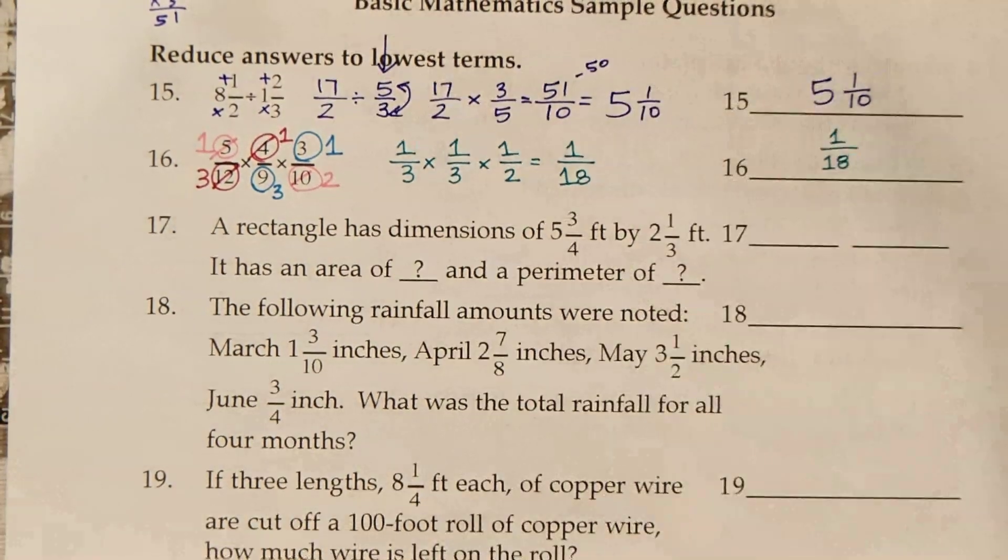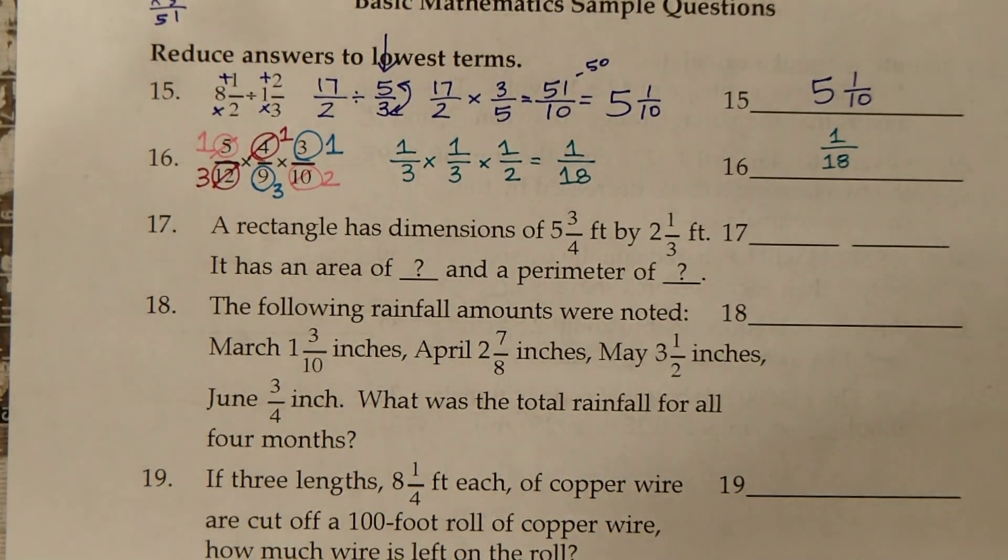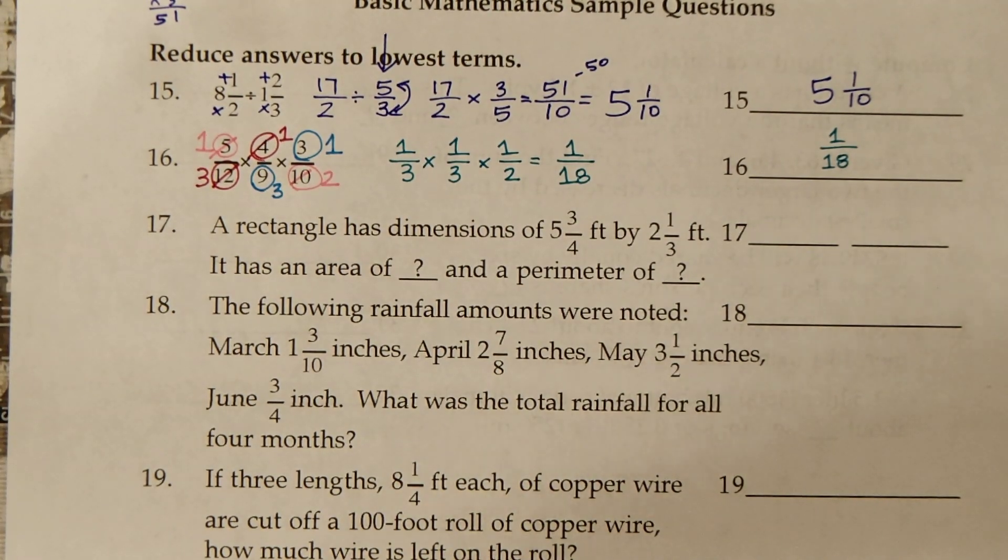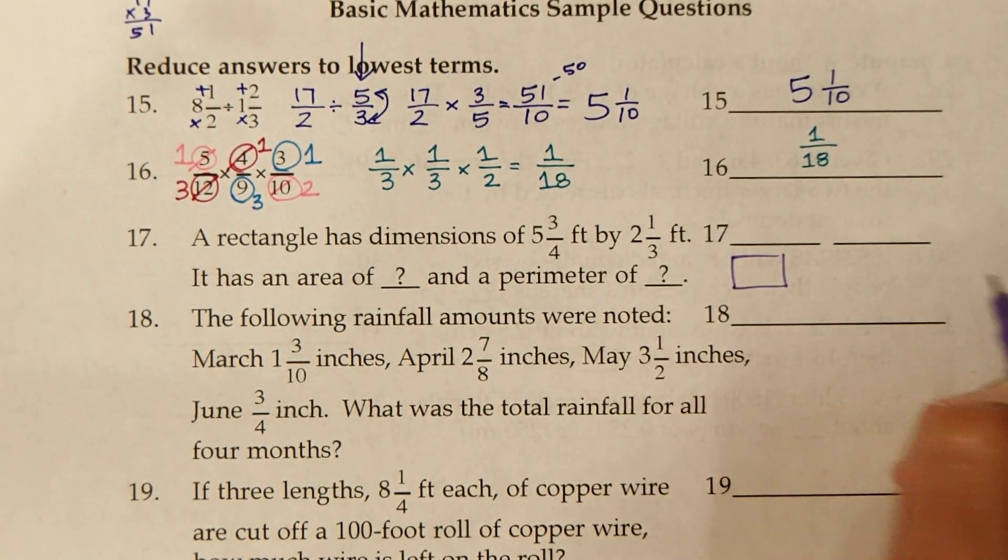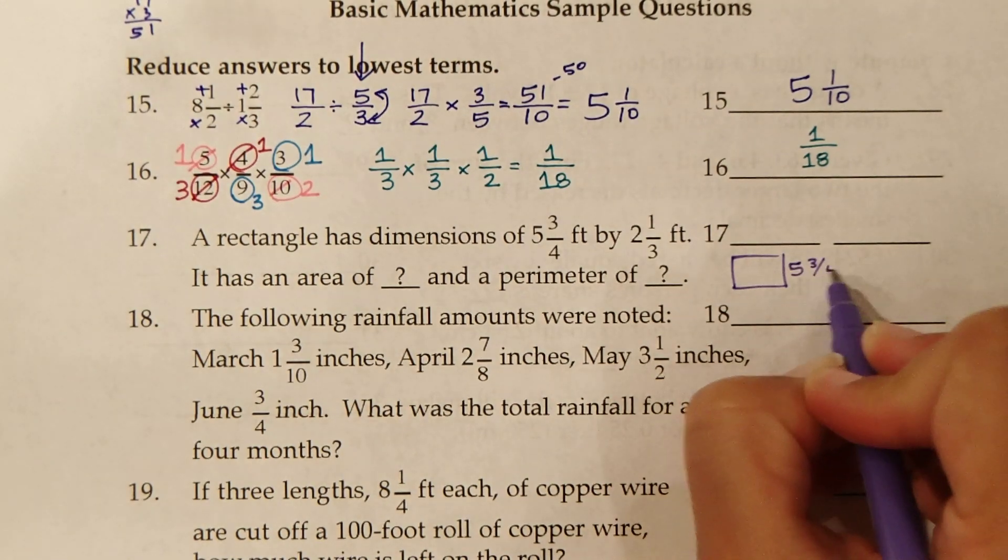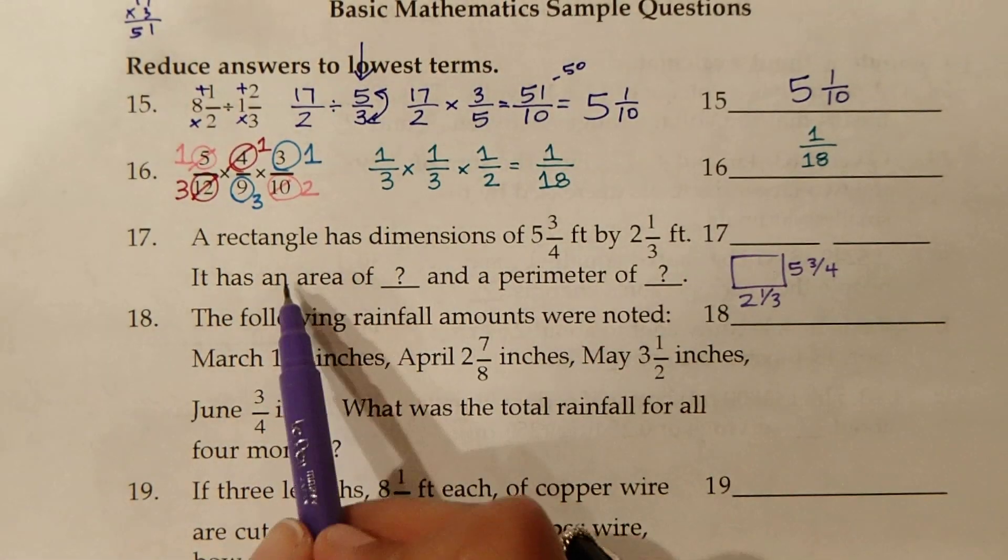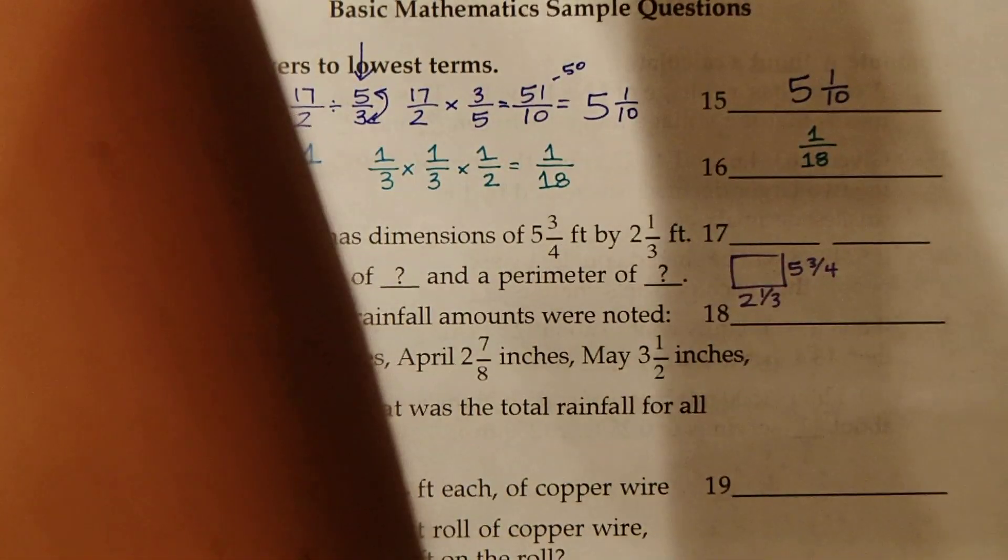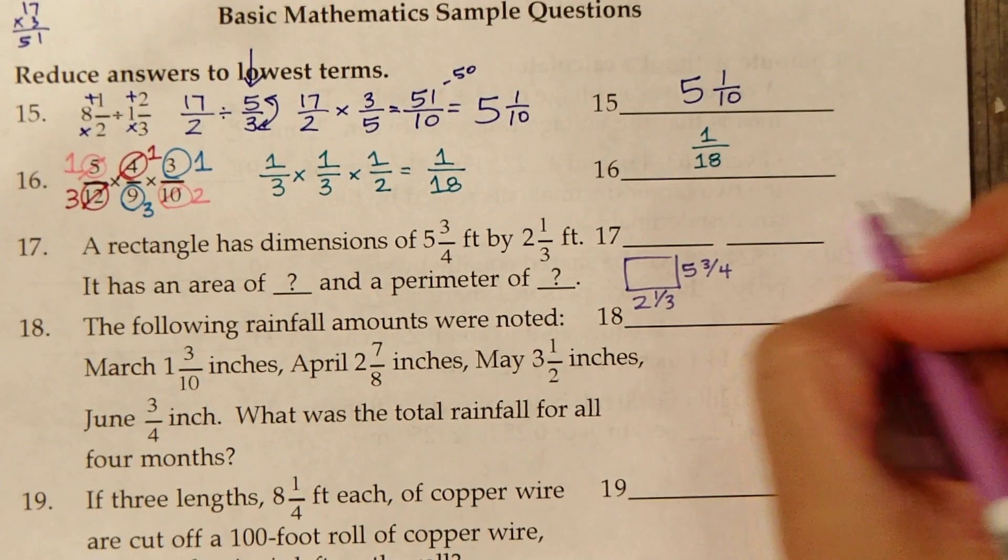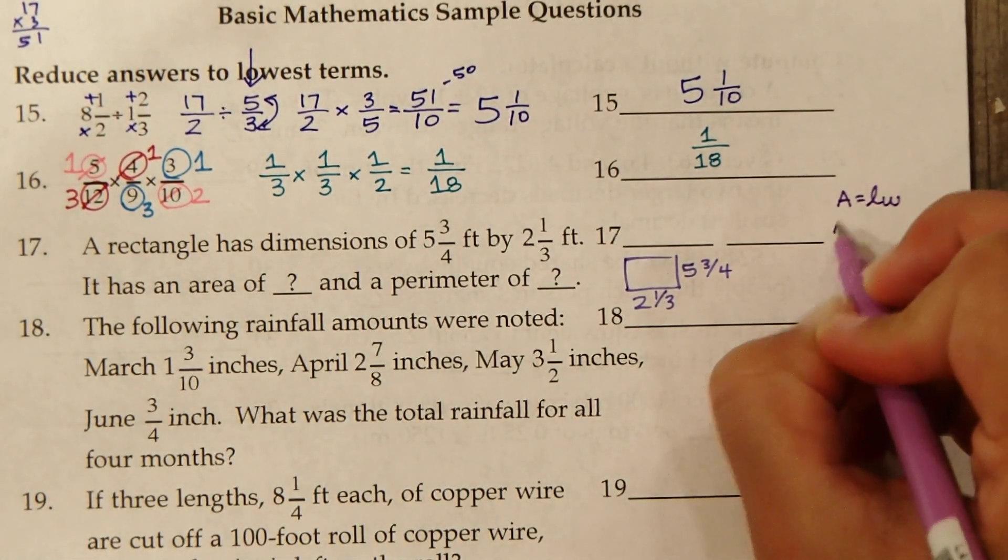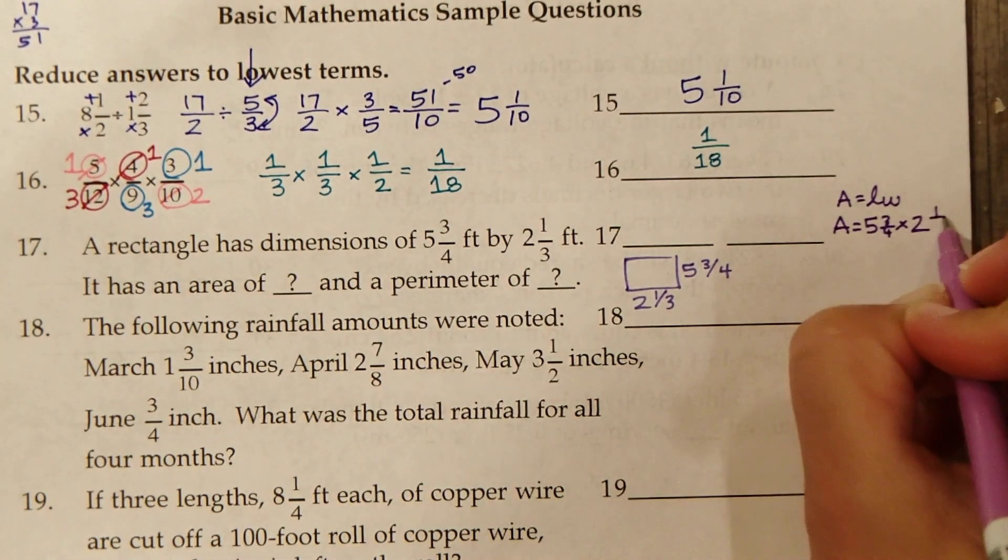Number 17. A rectangle has dimensions of 5 and 3 4ths feet by 2 and 1 3rd foot. It has an area of and a perimeter of. Let's look at the area first. In order to find the area, I need to multiply these two numbers. Area equals length times width.